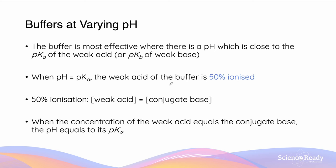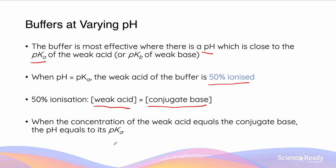We choose a variety of buffers for particular solutions, but the buffer that is going to be most effective is when the pH is very close to the pKa of that weak acid, or pKb for the weak base. This is because pKa is defined as the pH at which the weak acid of the buffer is 50% ionized, meaning the weak acid concentration equals its conjugate base concentration. So when the concentration of the weak acid equals the conjugate base, we know that pH equals the pKa.